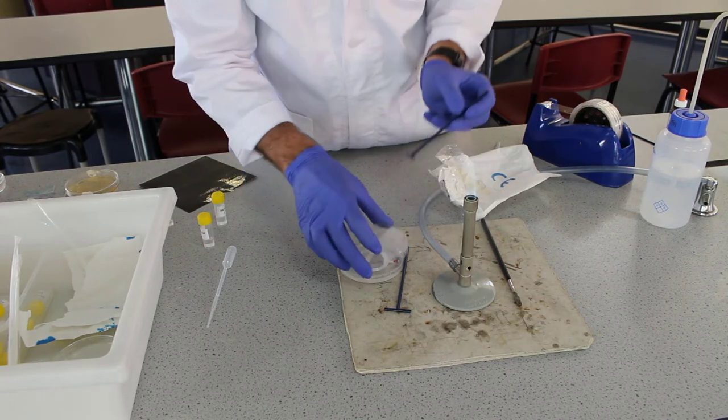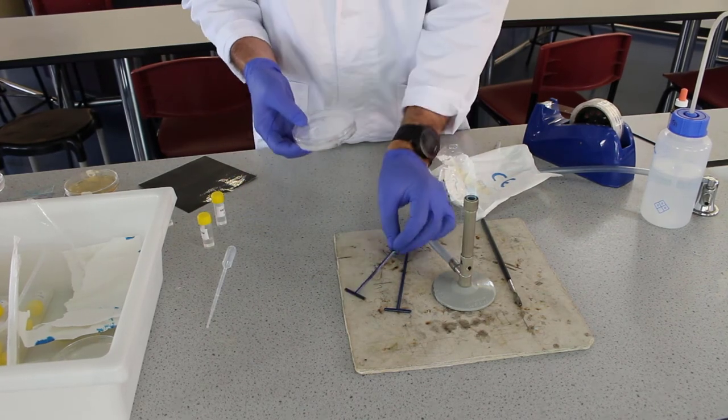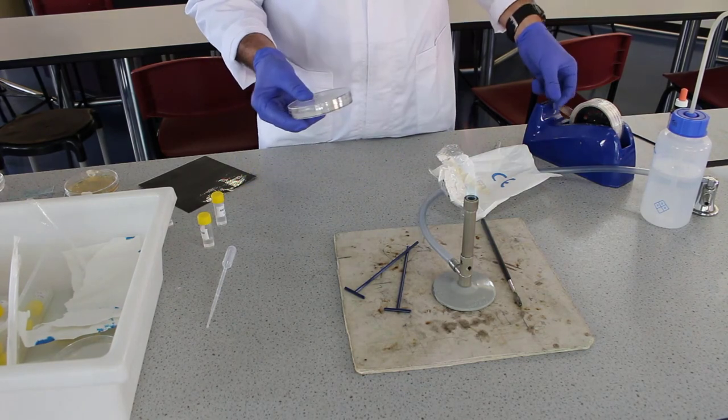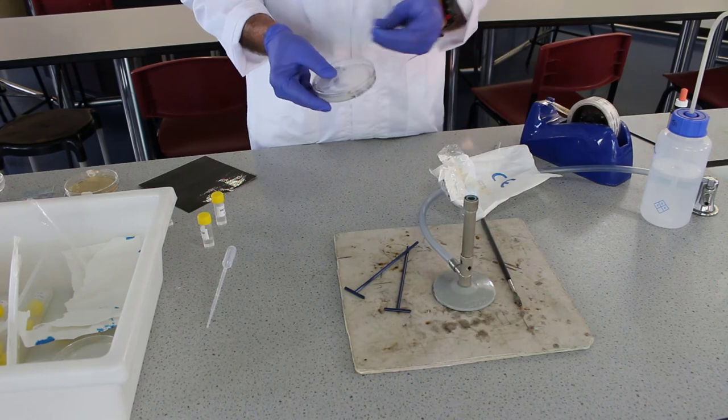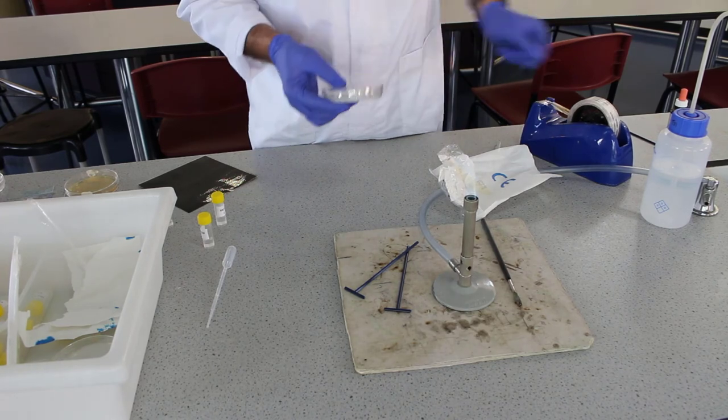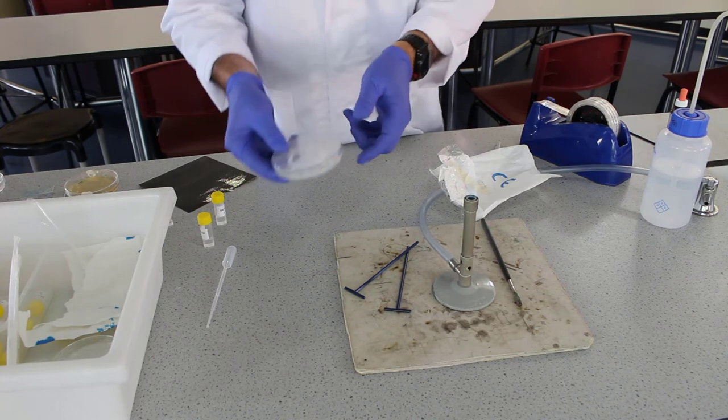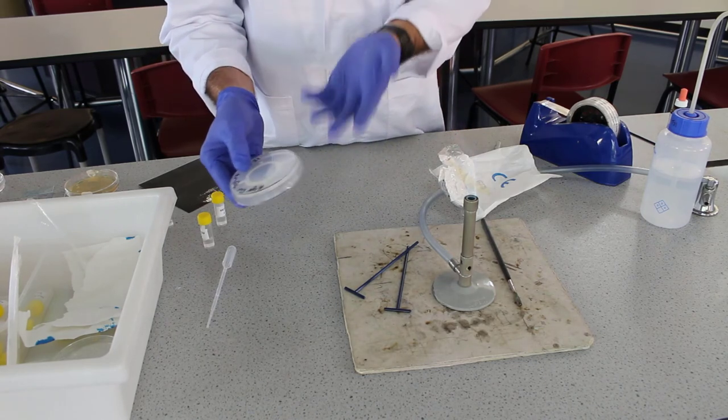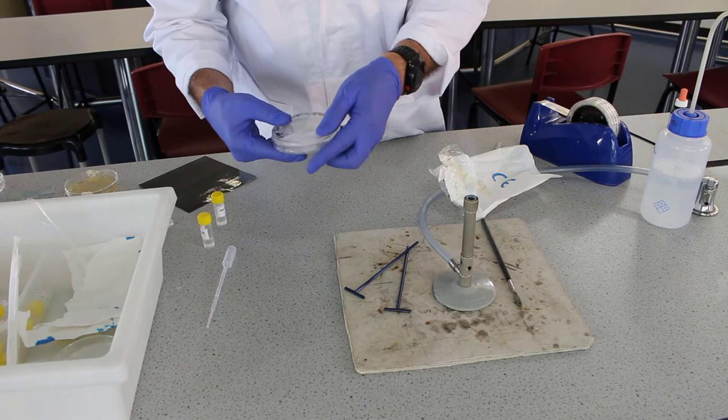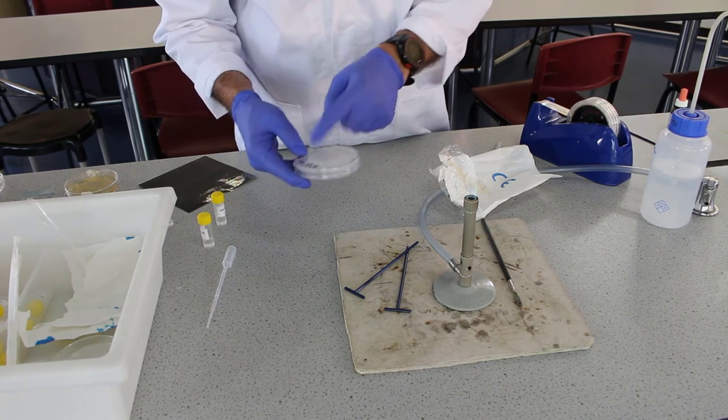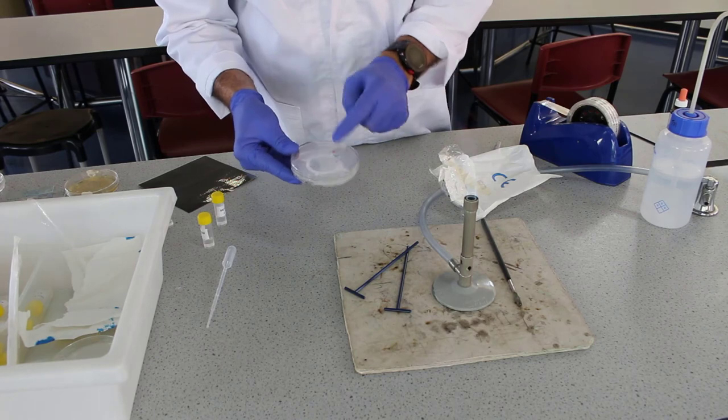We just need to push it down a little bit because when we put it in the incubator, we're going to put it upside down like this. To finish this off, a little bit of tape. This is going to go in the incubator for 48 hours. And what we're going to be measuring is the zone of inhibition around each of our antibiotic discs.